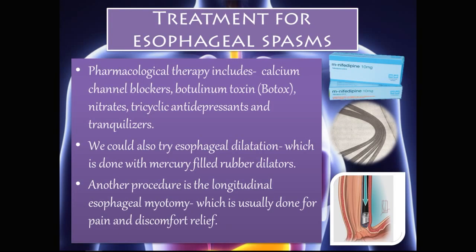Treatment options for esophageal spasms include pharmacological therapy — calcium channel blockers, botulinum toxin (Botox), nitrates, tricyclic antidepressants, and tranquilizers. Esophageal dilation can also be performed using a mercury-filled rubber dilator. The last procedural option is longitudinal esophageal myotomy, which is usually done for pain and discomfort relief.